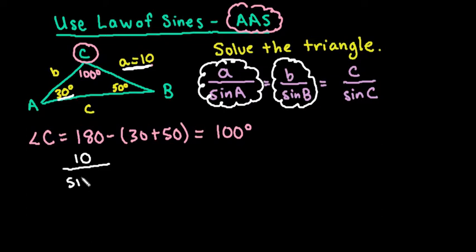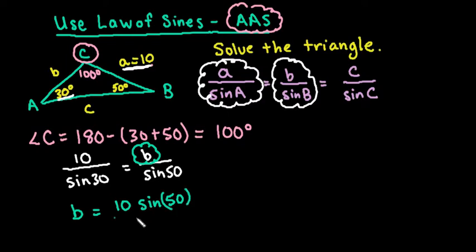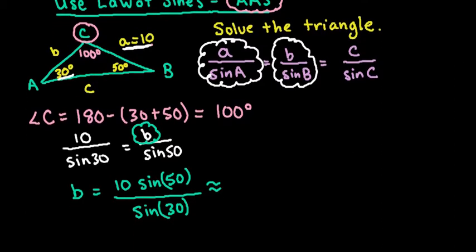So I would set this up as 10 over sin(30) is equal to B over sin(50). Now my goal is to solve for B. And so I would say that B is equal to 10 sin(50), because the opposite of dividing by sin(50) is multiplying by sin(50), over sin(30). So basically what I did was just multiply both sides by sin(50), and then I would plug this into a calculator.